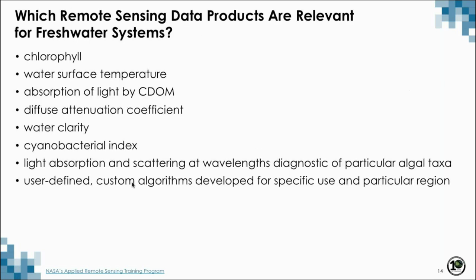Which remote sensing data products are relevant for freshwater systems? Again, much depends on what the particular problem is for your region of interest. Remote sensing data products can include chlorophyll concentration, water surface temperature, light absorption by CDOM, diffuse attenuation coefficient — the decay rate of light through the water column — water clarity, cyanobacterial index, spectral signatures for particular phytoplankton groups, and user-defined algorithms developed for a particular region.